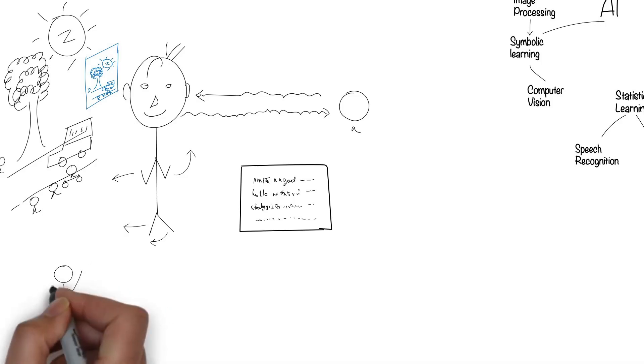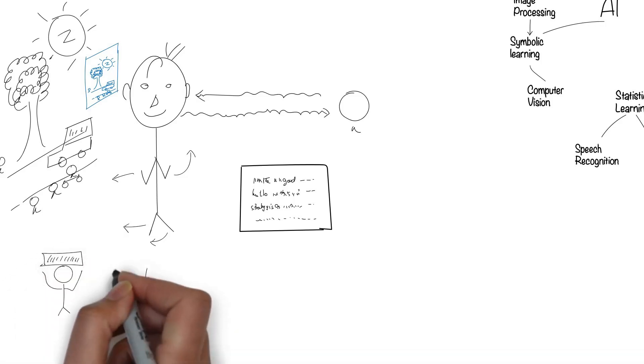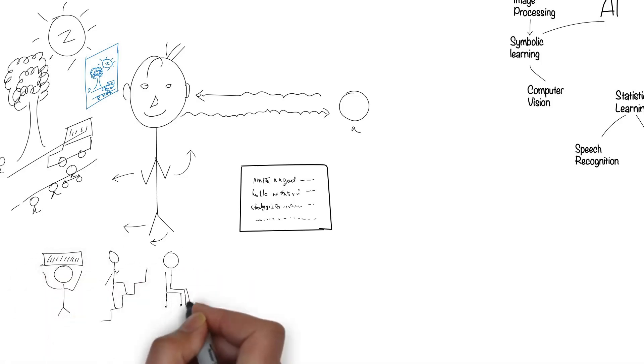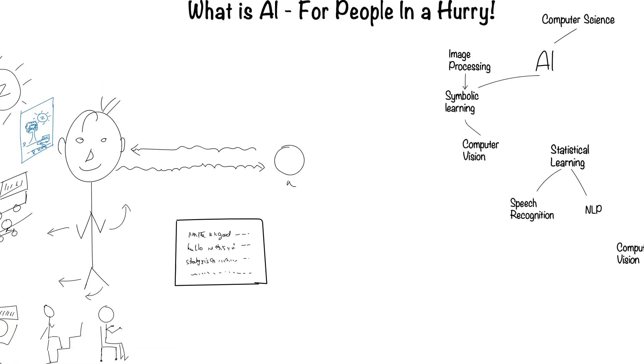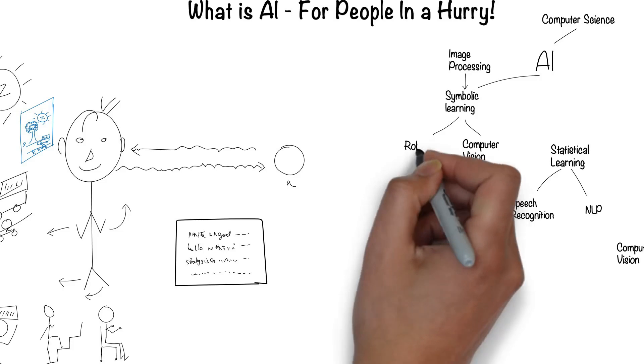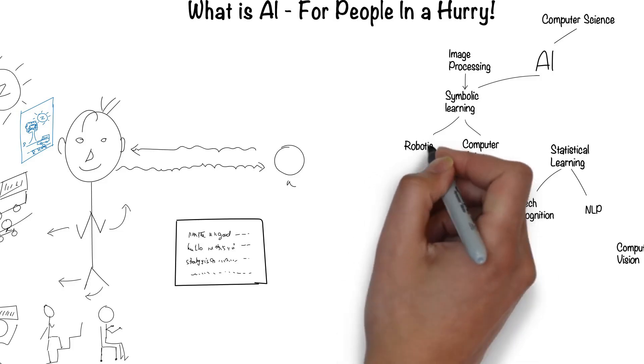Humans can understand their environment and move around fluidly. This is the field of robotics.